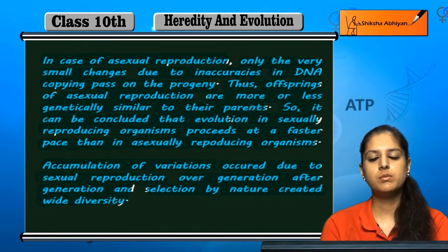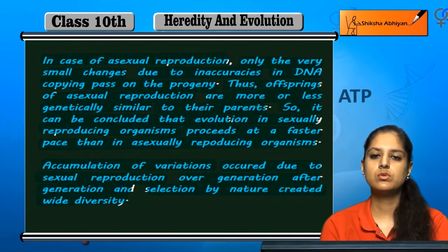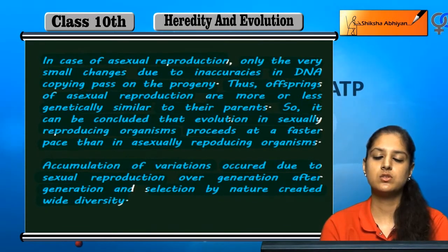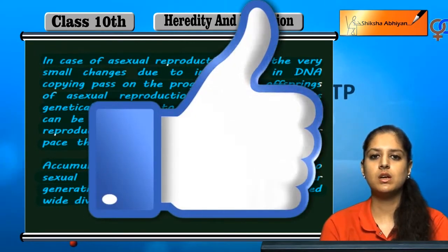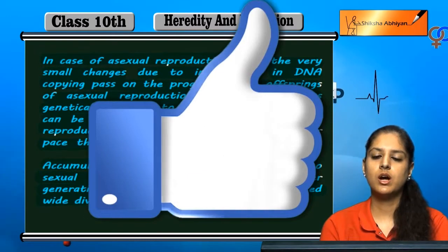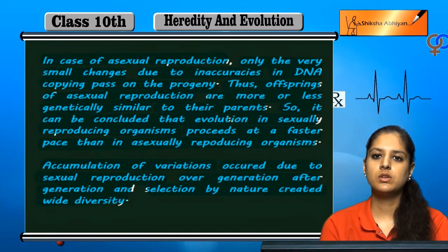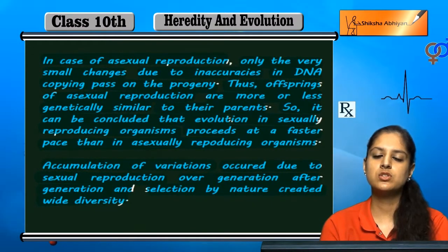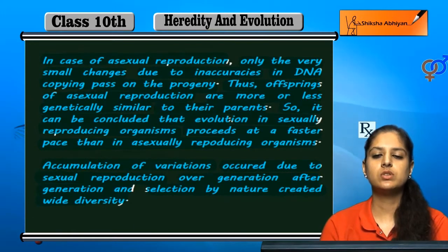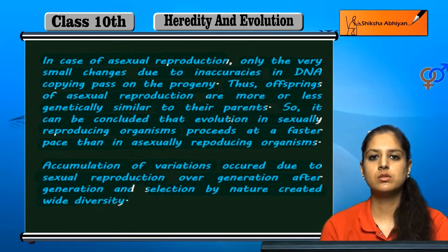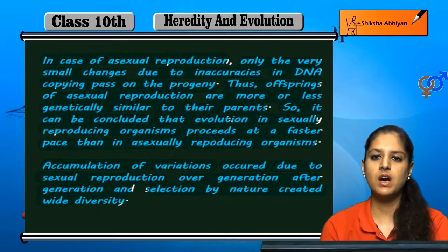Sexual reproduction has many variations, which explains the diversity we see. For example, in the human race, the color is different, the size is different, and the structure and body design is different. All of this happens because of variations, and the variation comes from DNA copying.